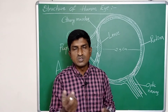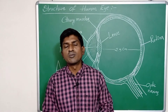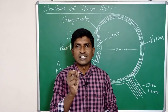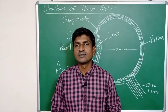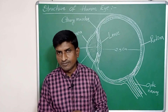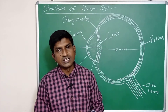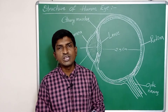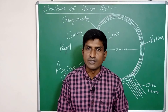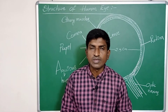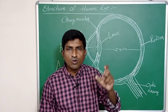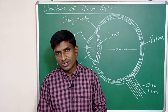We can observe objects clearly from a certain minimum distance from our eye. This distance is called the least distance of distinct vision. If you keep the object closer than this, then the focal length of the eye lens must change again.